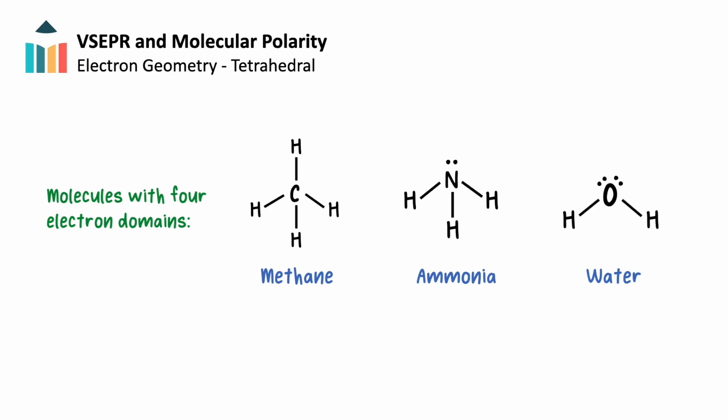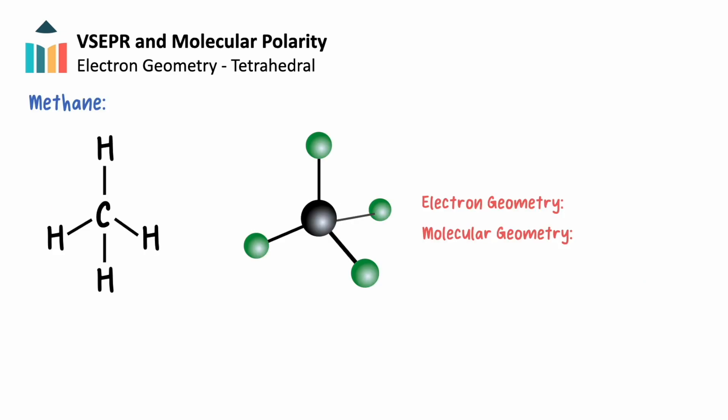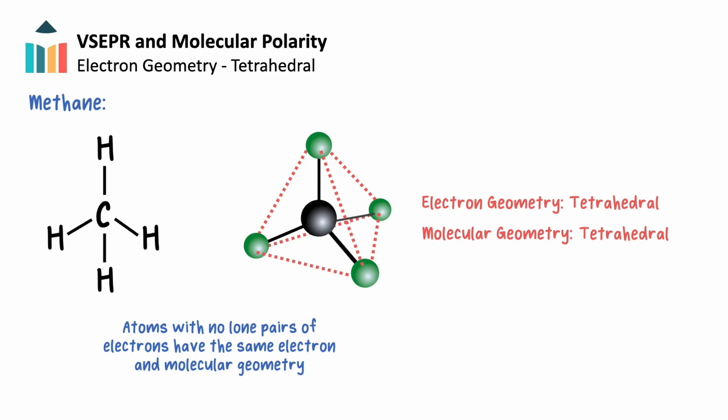Let's start our investigation with methane. This is a good place to begin as methane doesn't contain any non-bonded electron domains. Because of this, its electron geometry and molecular geometry are both described as tetrahedral, representing the shape created by all four electron domains in three-dimensional space. It's important to note that atoms whose electron domains are all bonded will have the same electron and molecular geometry.